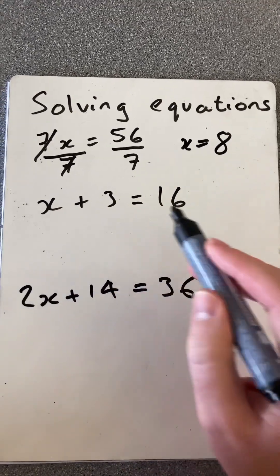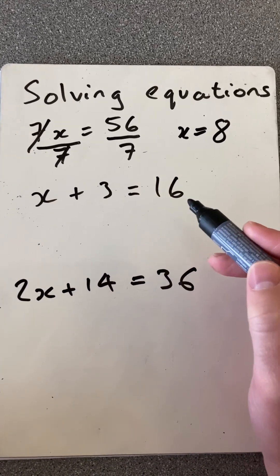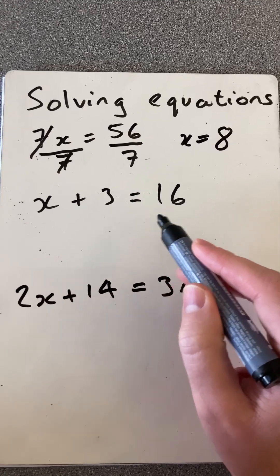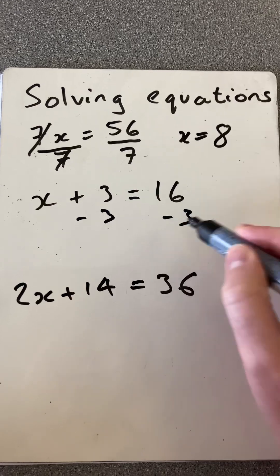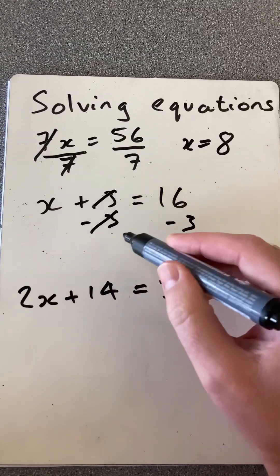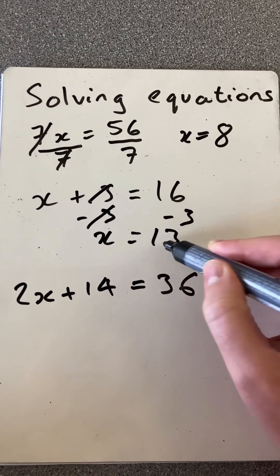Similarly, I could say something plus 3 is 16, so you could count on your fingers, or you could subtract 3 on both sides using the balance method again, and you will see those will cancel, and x will equal 13.